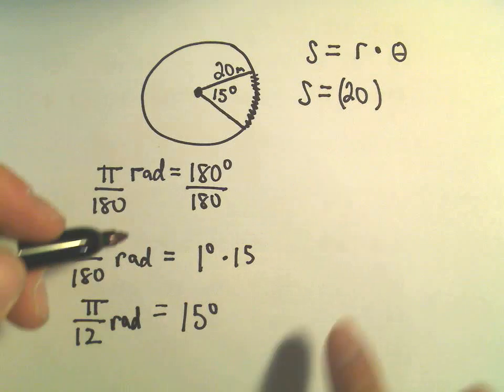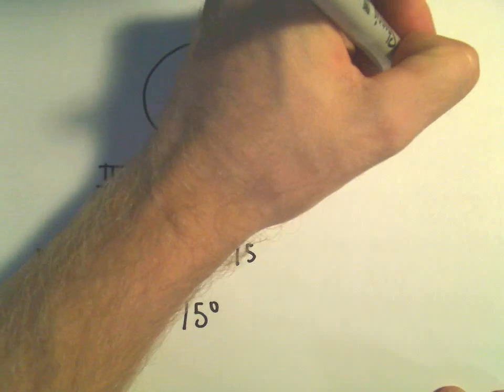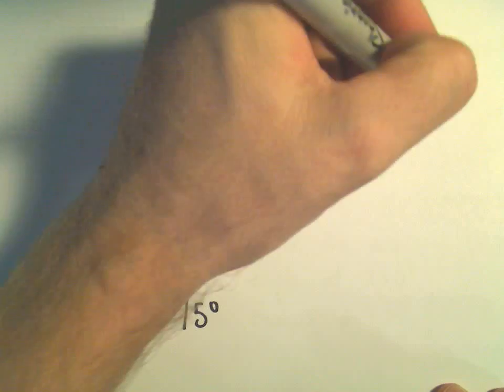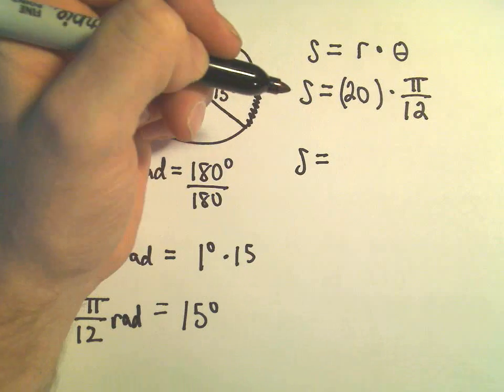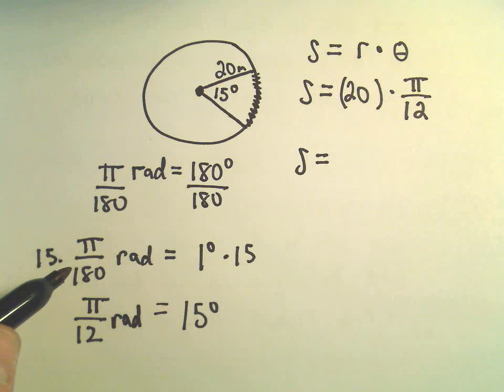So that's all we basically have to do is simply plug that in now for theta. We'll simply plug in pi over 12 radians, and again, this is all in meters. So really, we can simply just grind this out on a calculator.